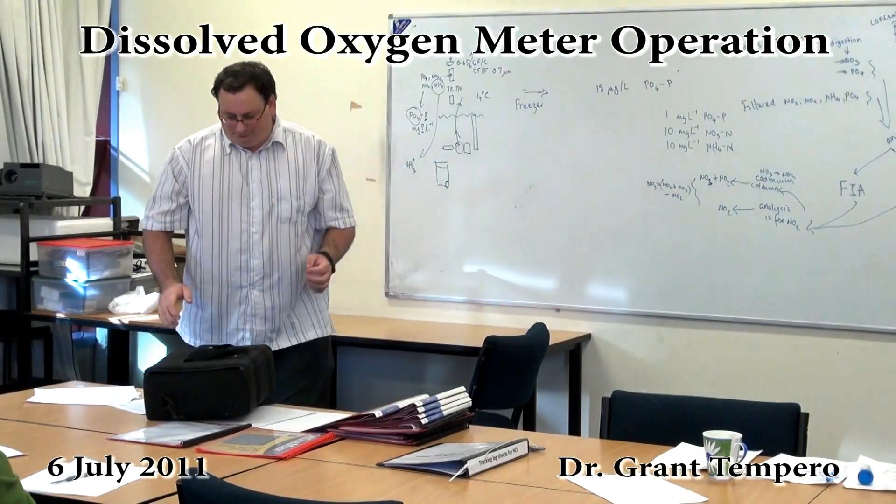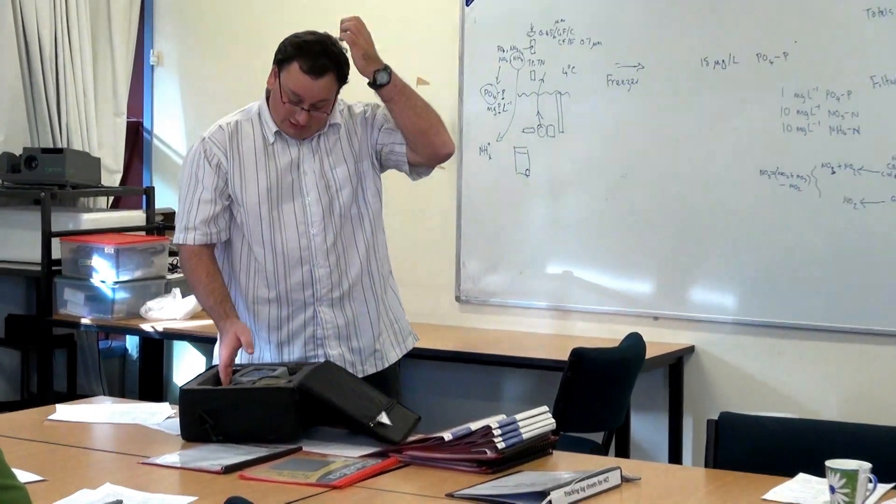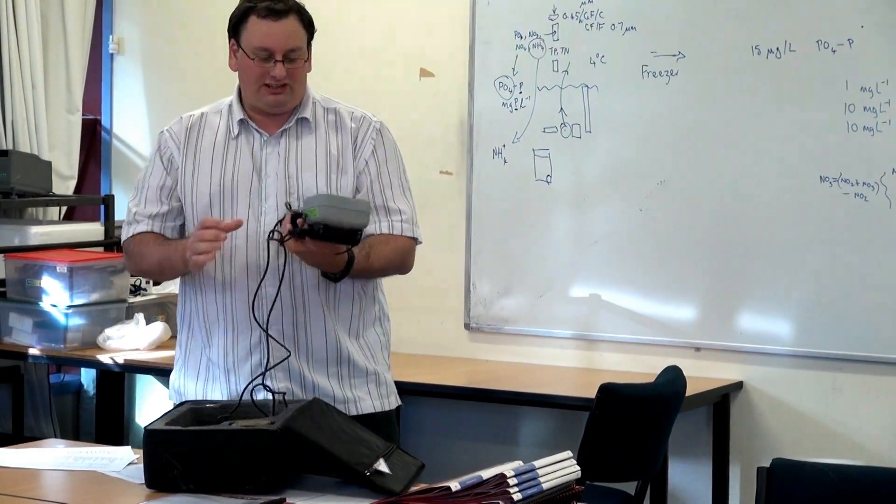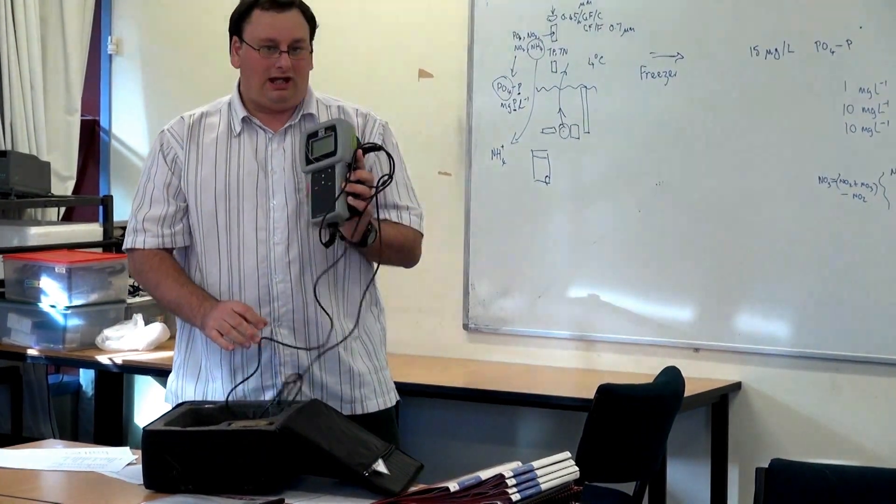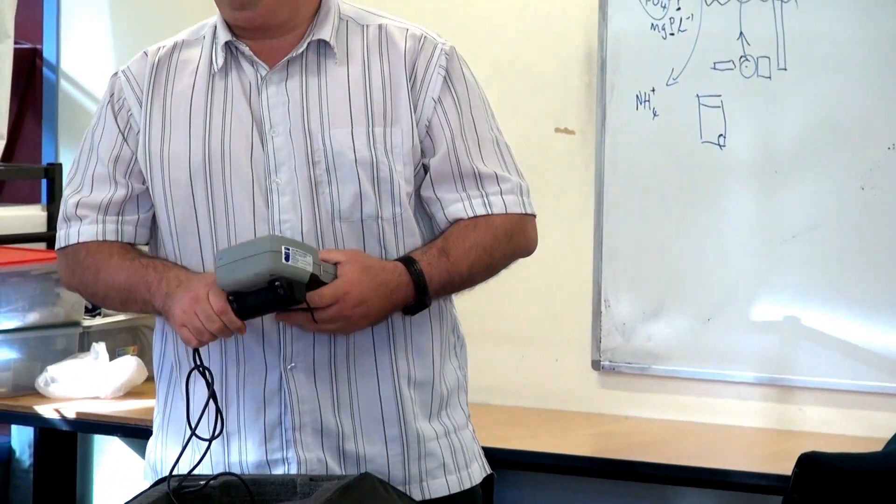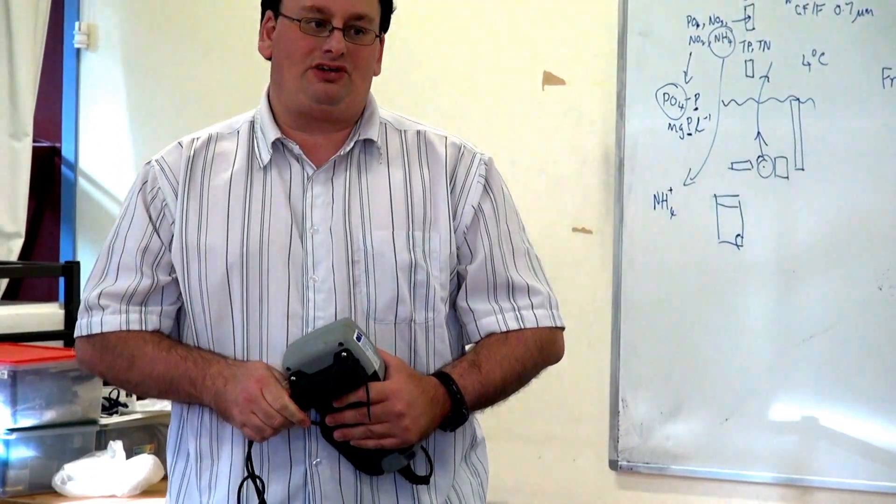Okay, on to the diometers. We've got several different types of diometers. These ones are the most recent, the 550A. They're quite simple to use, but the important thing with the diometers is you must calibrate them each time you go out.